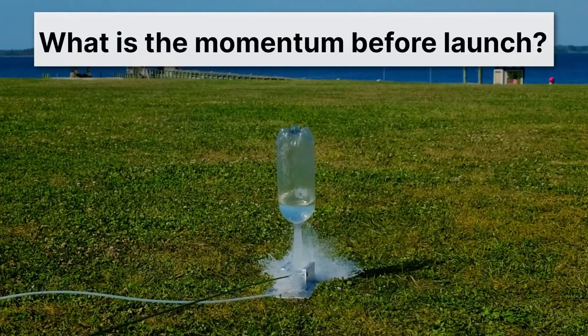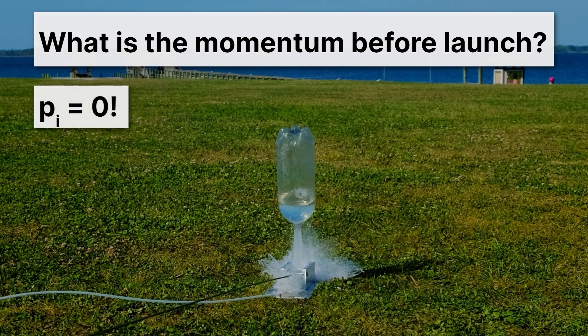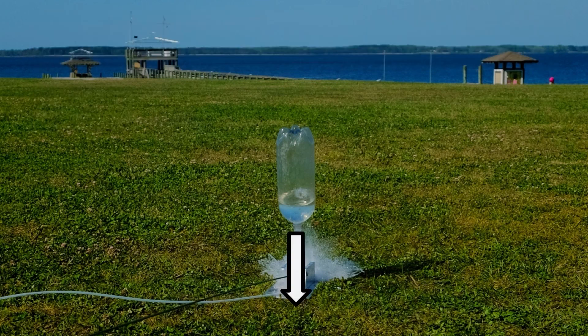Let's take a look at a smaller, more terrestrial rocket to understand this process. It's a water bottle rocket. This two-liter bottle is pouring out high-pressured water, and that's driving it upwards, launching it. What we want to ask is: what is the momentum before launch? Well, before it moves at all, it has to have a momentum of zero — so the momentum initial must be zero. Then it launches, water pours out the bottom, and the bottle goes up.